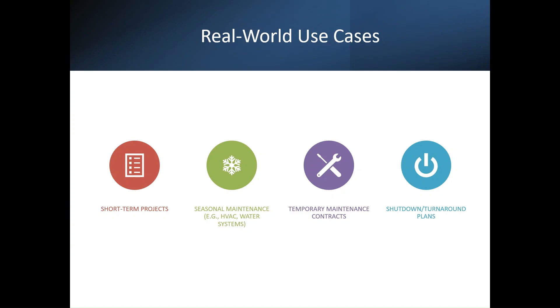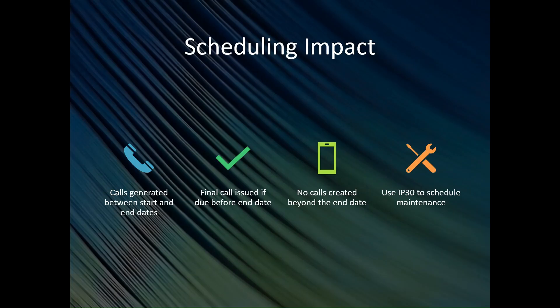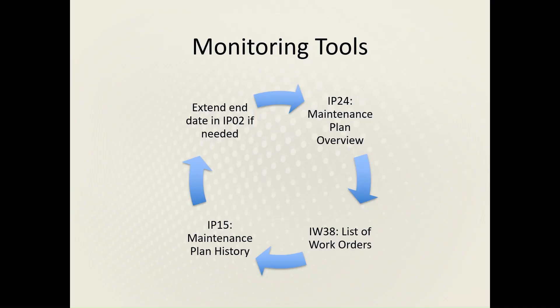Regarding scheduling impacts: calls are generated between the start and end dates, and the final call must be issued before the end date arrives. No call will be created beyond the end date. To schedule the maintenance, use transaction ip30, which enables scheduling for a specific maintenance plan.